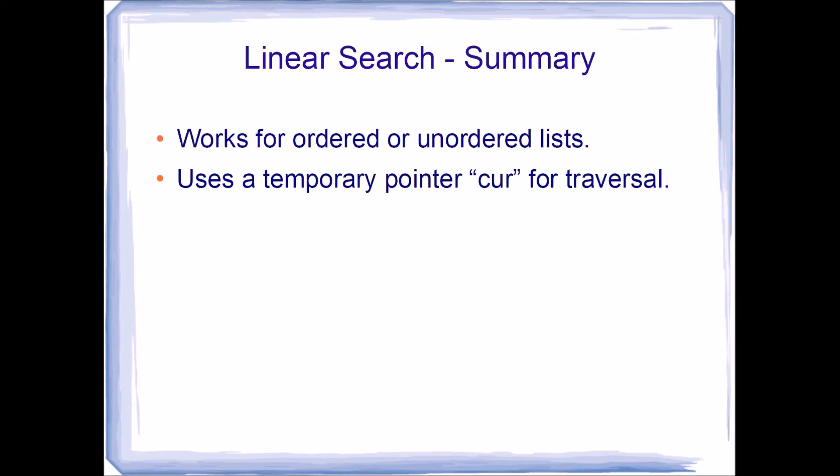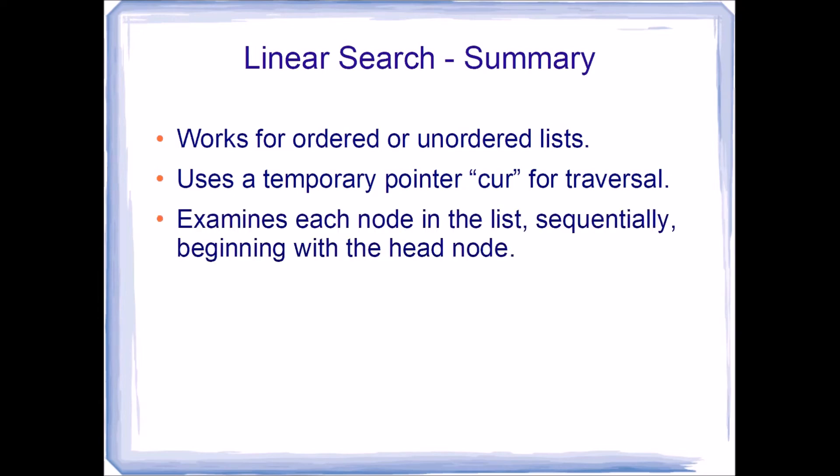We use a temporary pointer 'cur' for traversal. We examine each node in the list sequentially, beginning with the head node. The value is not found when cur contains null. Remember to always check your pointer for null before checking the node that the pointer is pointing at.